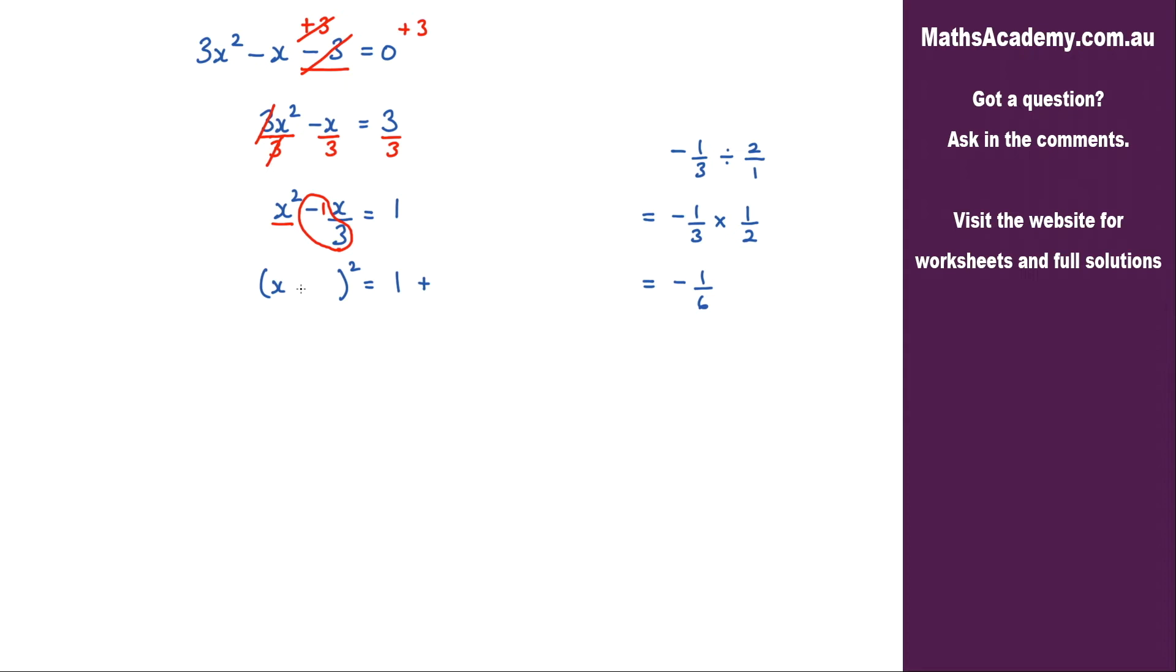So over here what we have is negative 1 over 6, and on the right hand side again it'll be negative 1 over 6 but we have to square it.